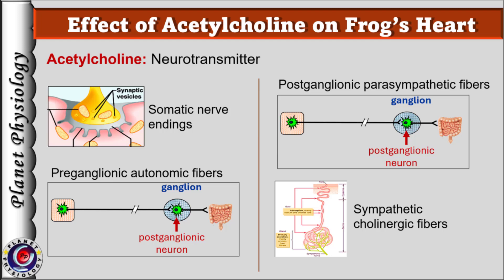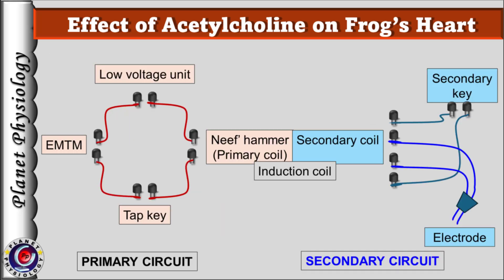Now let's study how to record the effect of acetylcholine on the frog's heart. First, the electrical circuit is prepared by taking a battery, nips hammer, EMTM, and tap key in the primary circuit, and secondary coil, secondary key, and electrodes in the secondary circuit. You may wonder what's the need of an electrical circuit in this experiment. We can directly pour acetylcholine on the heart and note the changes, and yes, that's the simplest way, but the procedure varies across institutes.